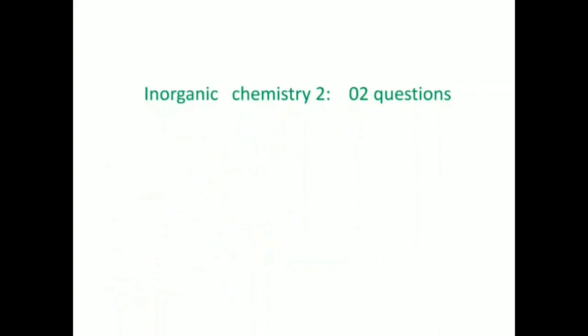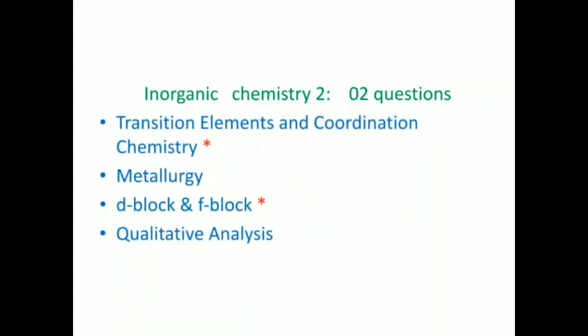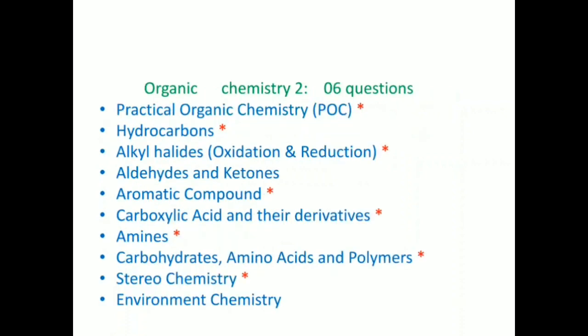In Inorganic Chemistry 2, you get two questions - two important topics and two are moderate level. Focus more on the asterisk ones. And in Organic Chemistry 2, you get six questions. Aldehydes and ketones and environmental chemistry are less important compared to the others. Study more on the parts with asterisks. These are the topics you need to study.